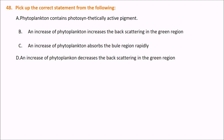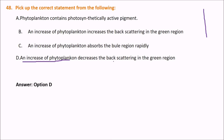The next question is about phytoplankton — it is a pigment you come across when reading about leaves. Please read the options carefully. The answer is: an increase of phytoplankton decreases the back scattering in the green region.